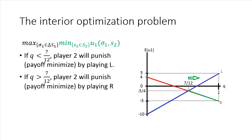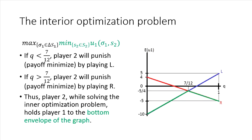So the thing to notice here now is when player two is optimally minimizing, punishing player one, that holds player one to the bottom envelope of this graph, which I've highlighted here in green. Now, that is the solution to the interior optimization problem from player two's perspective,